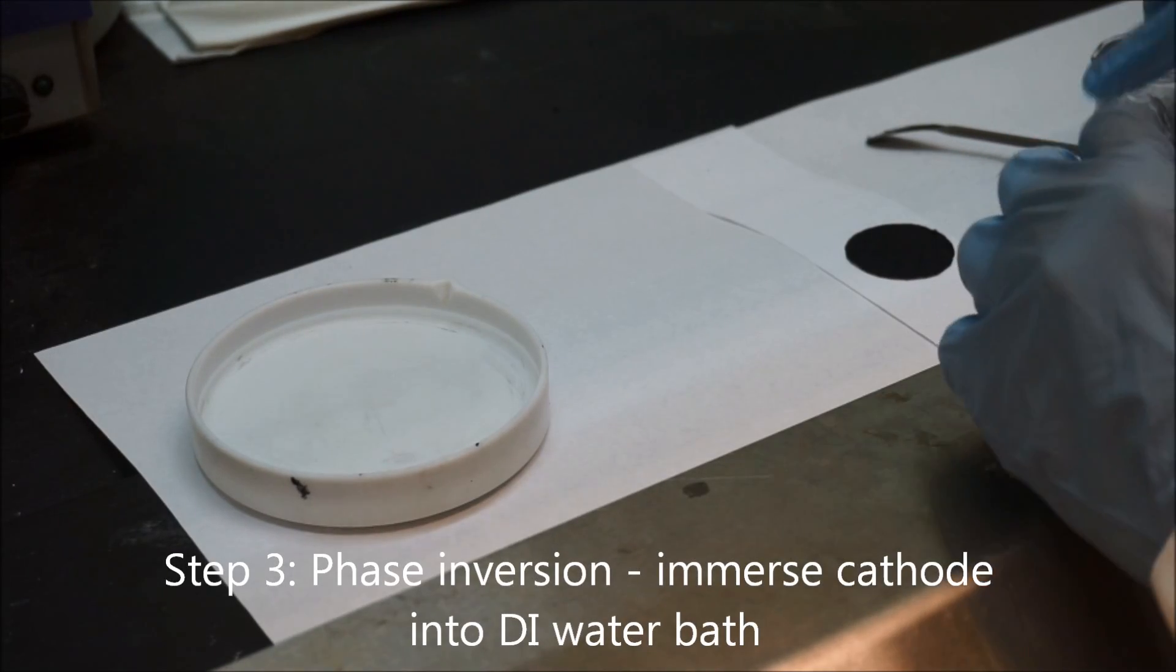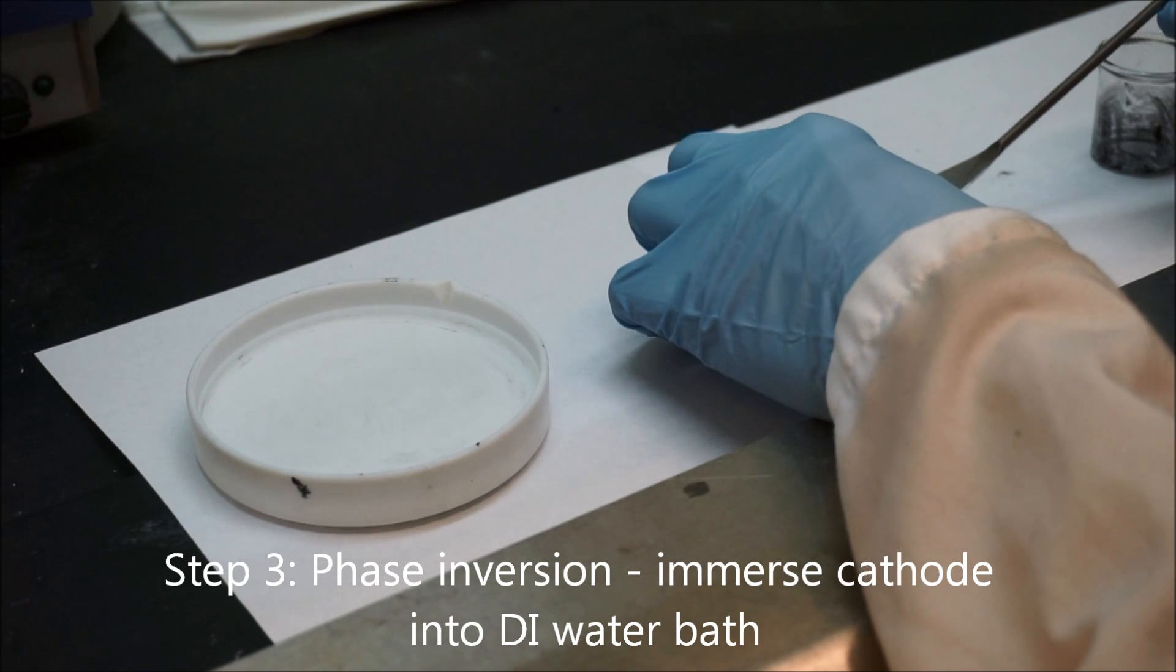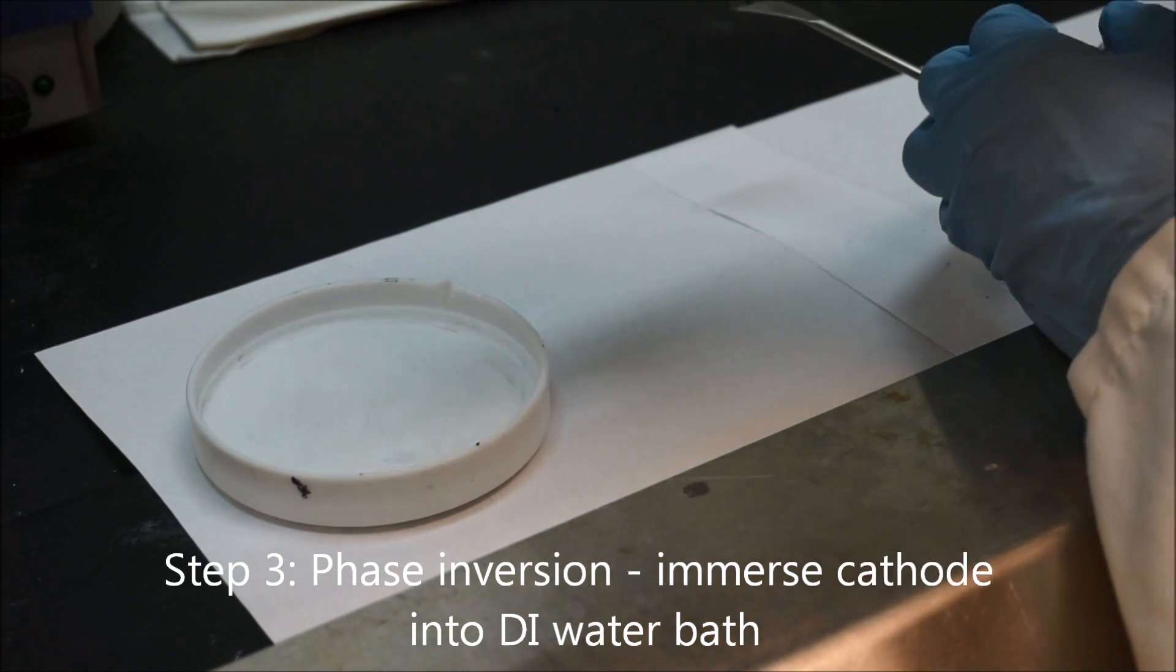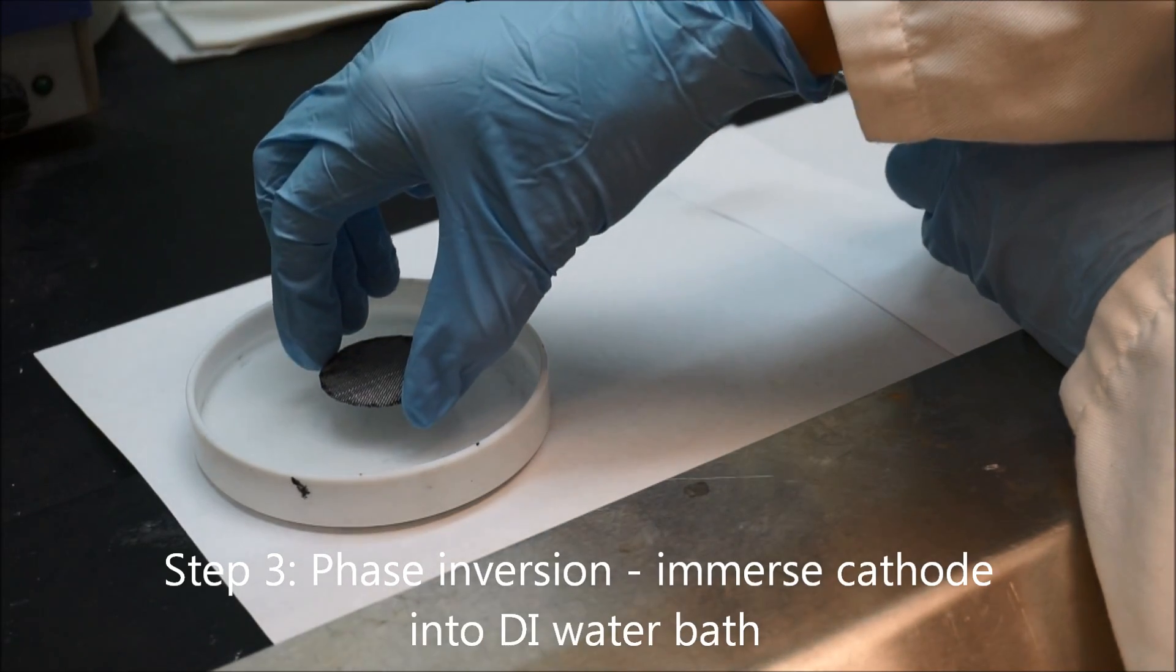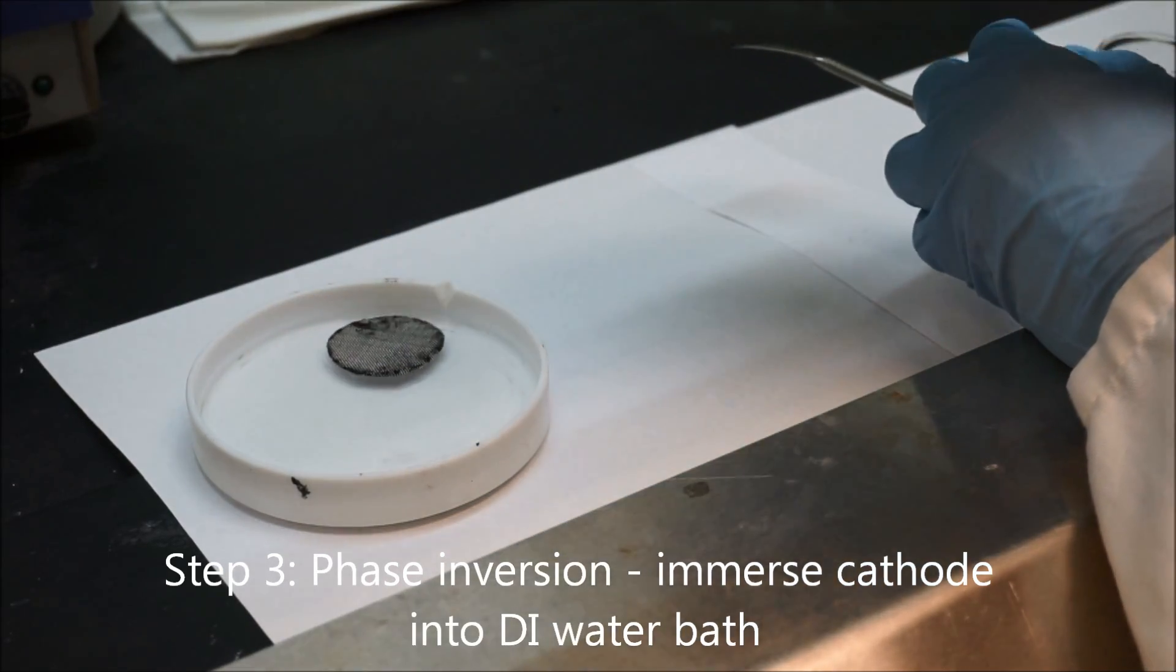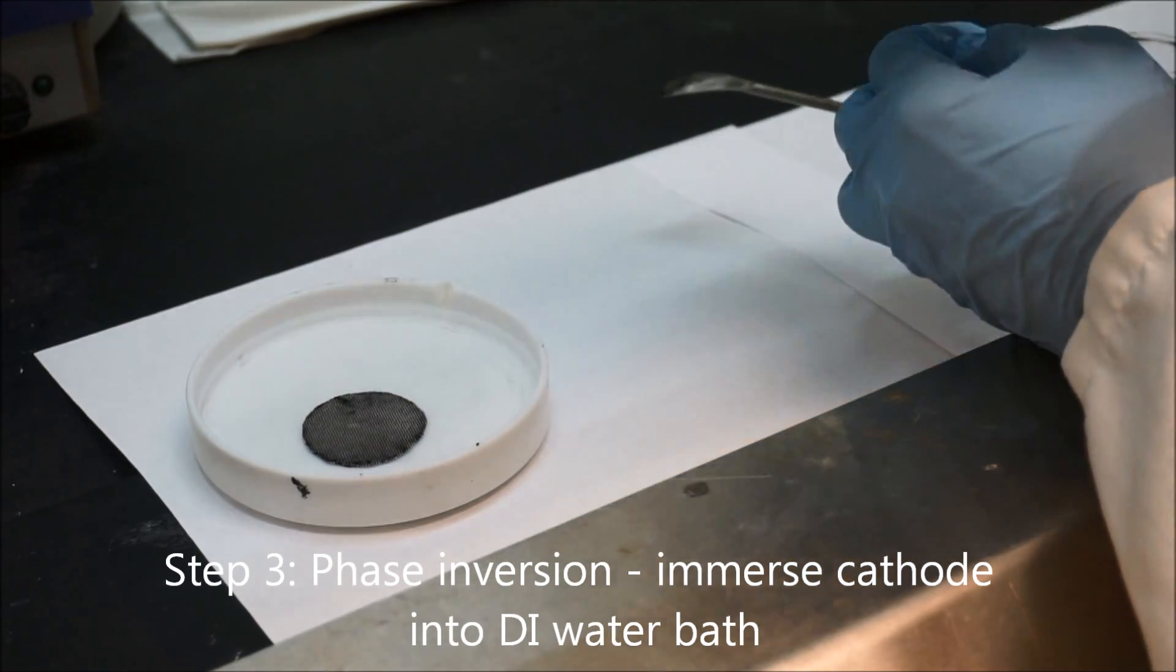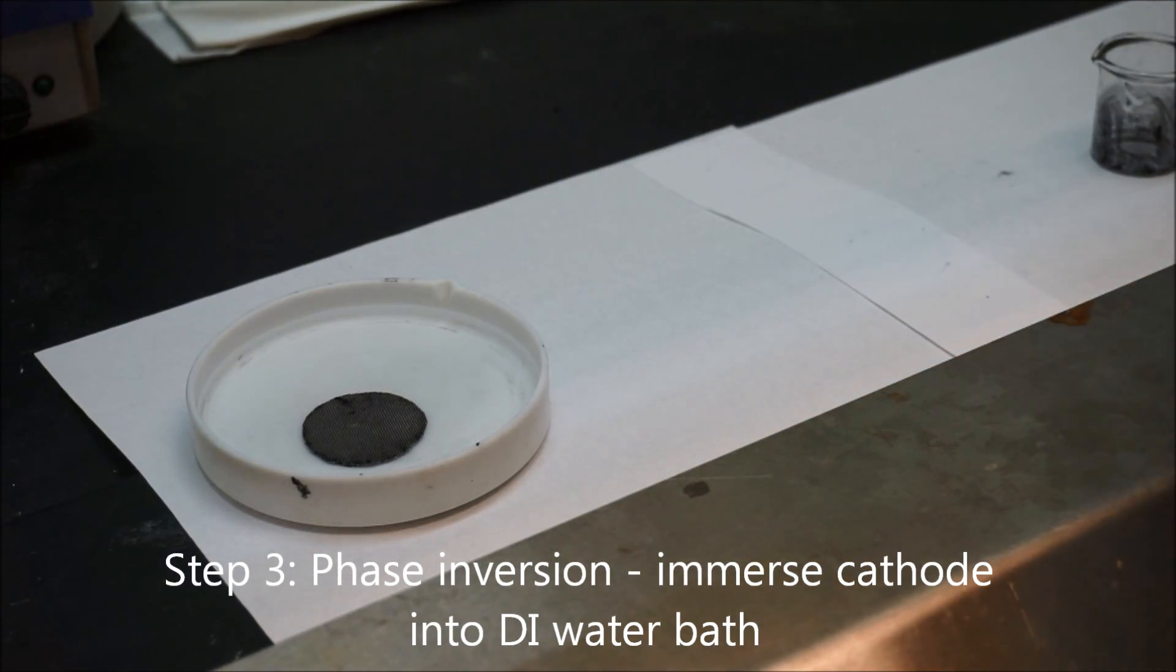After spreading the active carbon mixture onto the stainless steel mesh, the next step is to put the active carbon cathodes into the DI water bath to go through phase inversion process. Remember to put the active carbon mixture side towards the bottom and then leave the active carbon air cathode for 15 minutes.